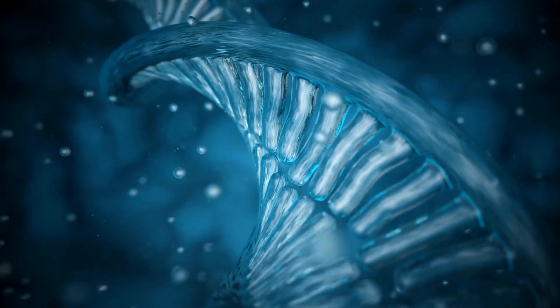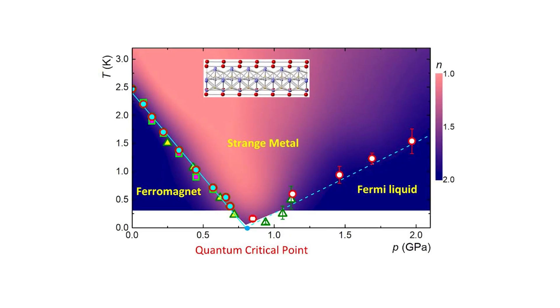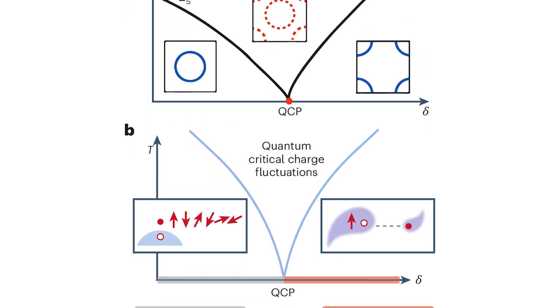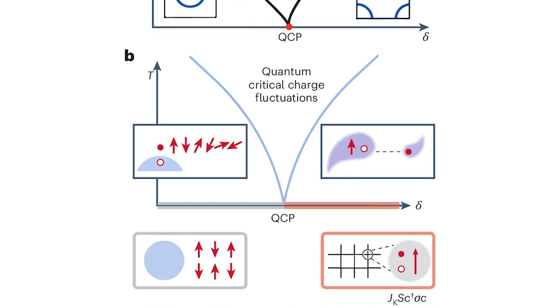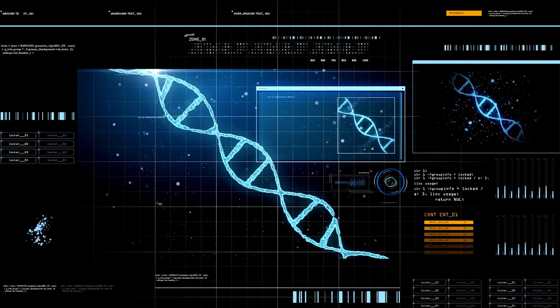Some researchers propose that certain biological systems may have evolved to operate near quantum critical points, boundary conditions between classical and quantum behavior where the system can access advantages of both regimes. This could allow organisms to switch between quantum and classical modes depending on environmental conditions.